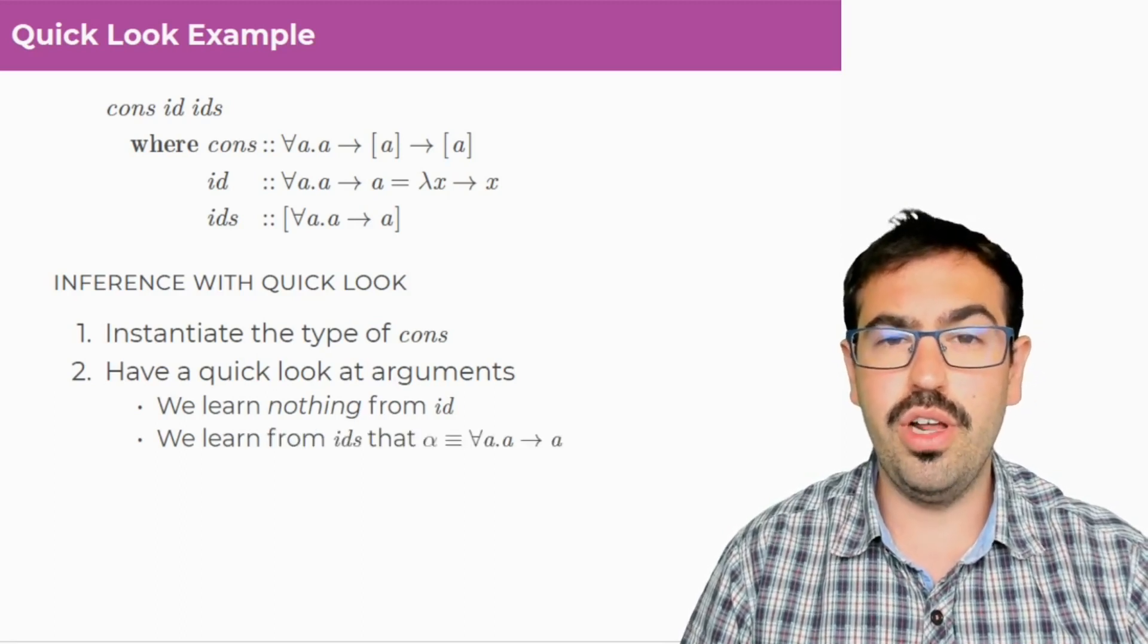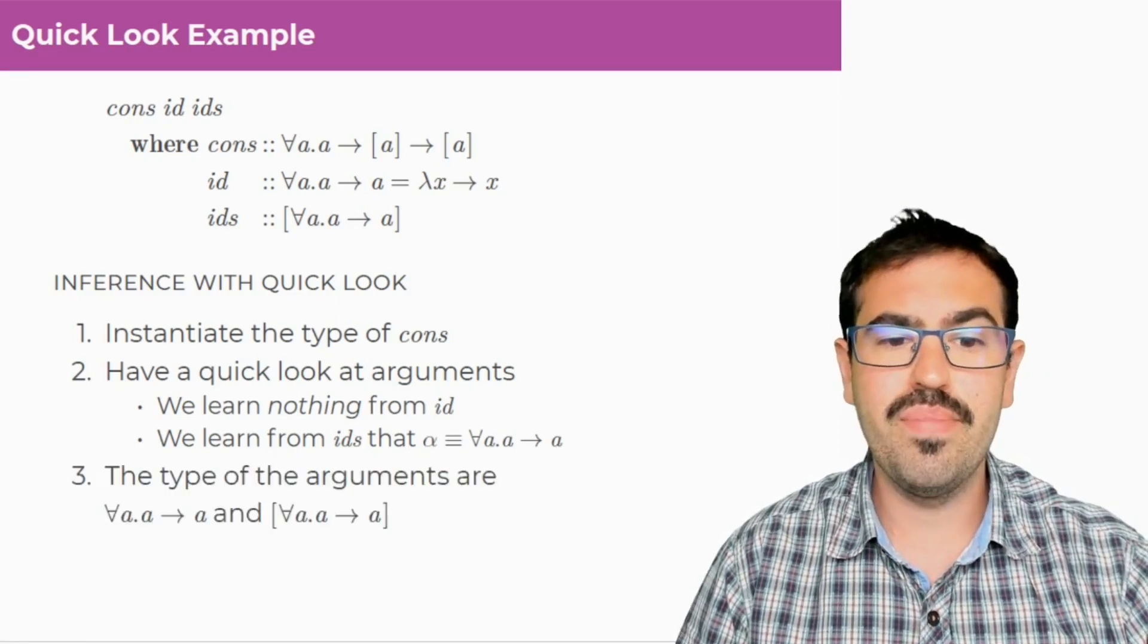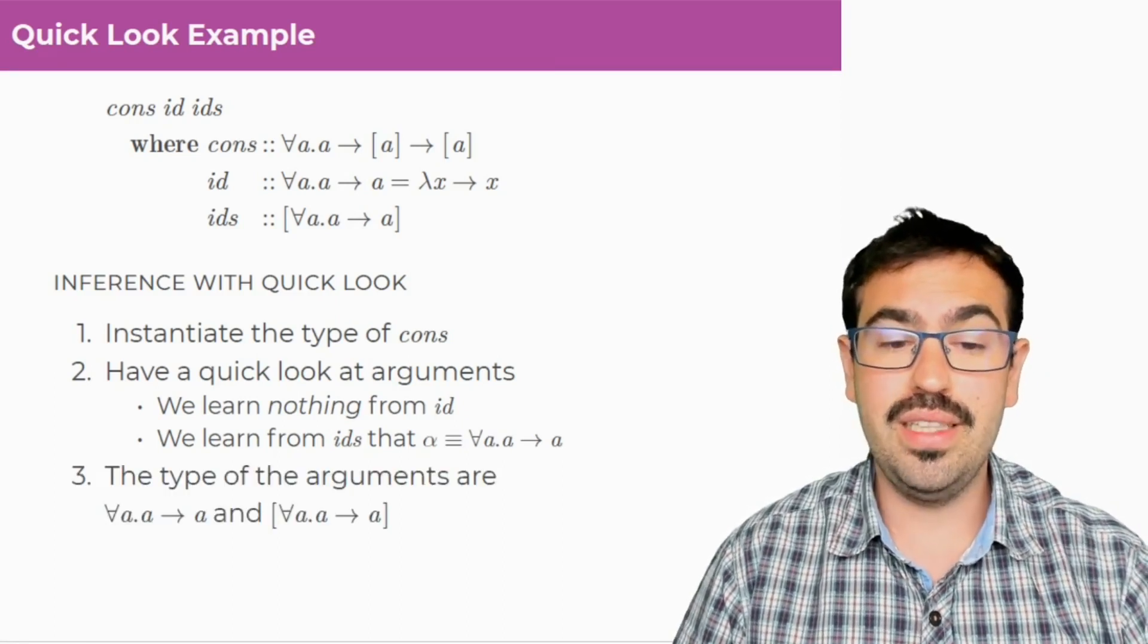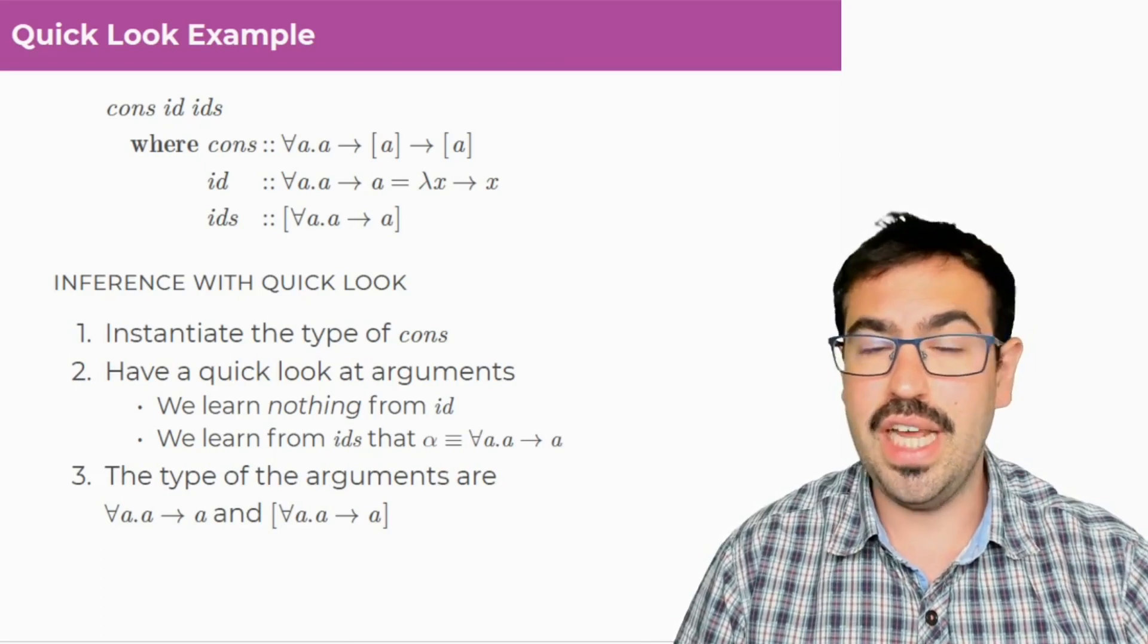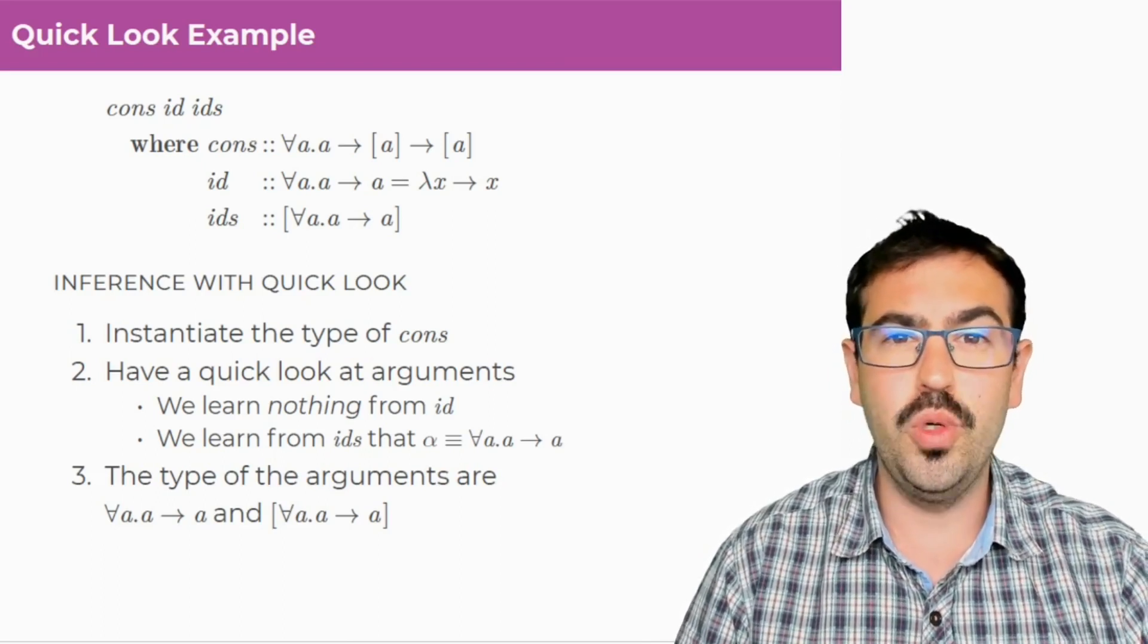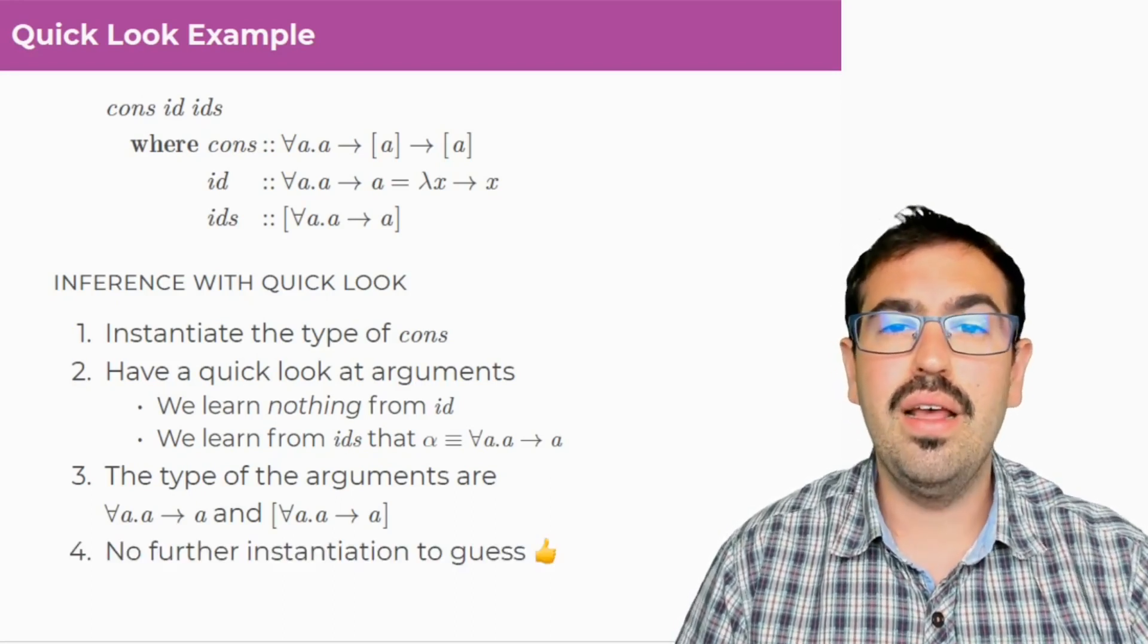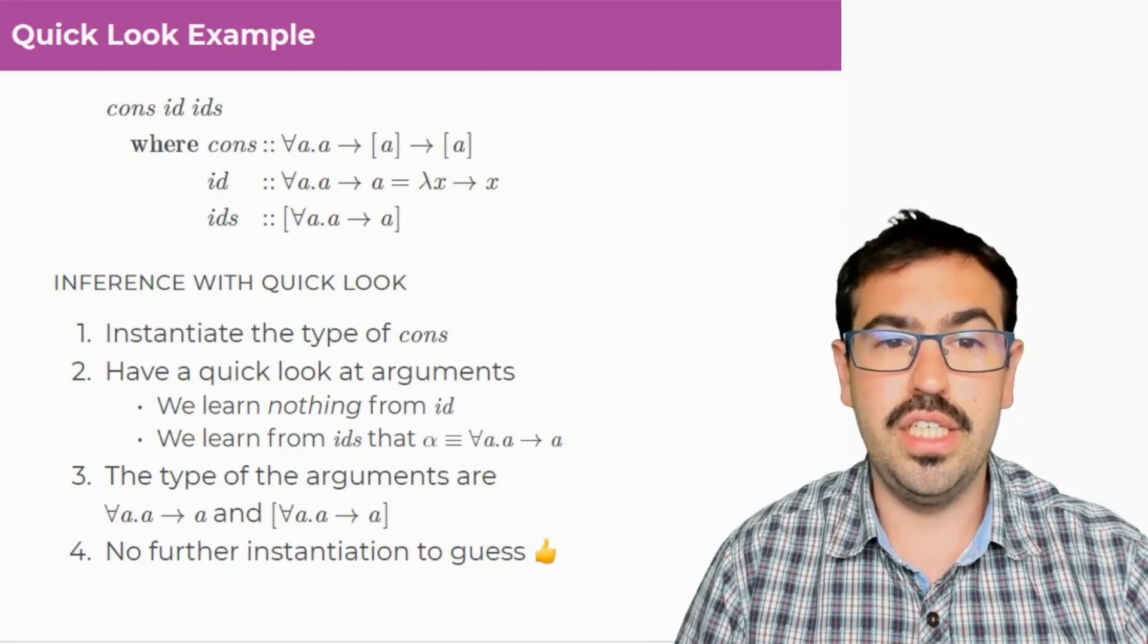At this point, what we know is that the type of those arguments are not just any alpha, they are exactly for all A dot A to A and list of for all A dot A to A, and there is nothing else to guess, and type checking can succeed.